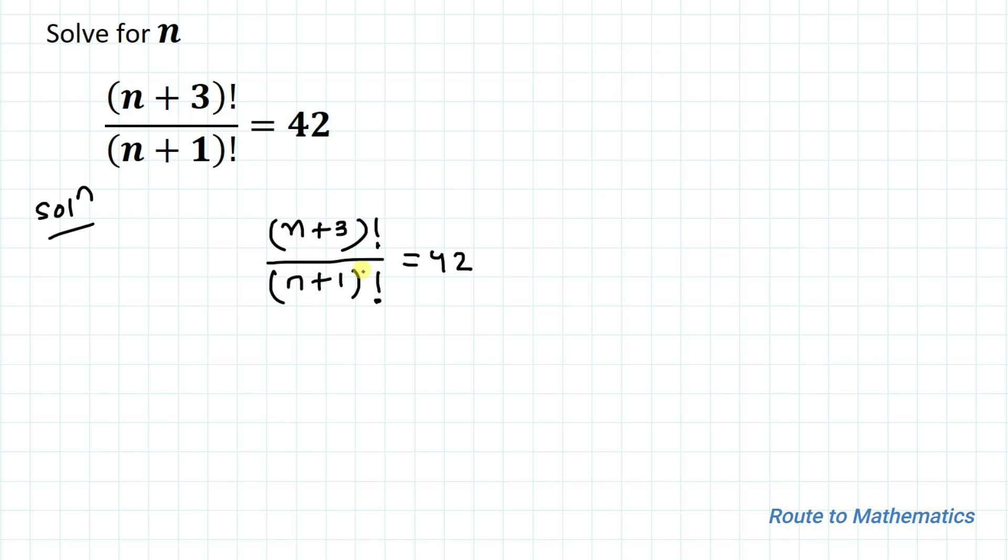Okay, so factorial means nothing but the product of all positive integers. So we can write (n+3)! as (n+3) multiplied with (n+2) multiplied with (n+1)! divided by (n+1)! equals 42.